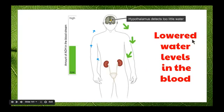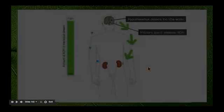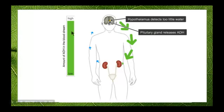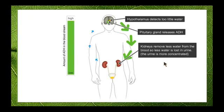However, if we have a decreased amount of water — our water level is lower — the hypothalamus detects that the water level is too low, as shown by the small blue arrows. The amount of ADH in the blood increases significantly, making its way to the kidneys and acting on the tubules so less water is removed from the blood. The urine becomes more concentrated. For example, when we're dehydrated, our body draws as much water in as possible in response to ADH, producing only small amounts of dark yellow concentrated urine.